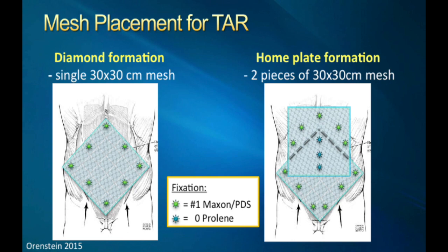Mesh fixation is a bit controversial. Typically, I like to place a round of transfascial sutures to fixate my mesh — usually one superiorly, one inferiorly, and then two or three at the lateral aspects. If I do a home plate, sometimes I'll take a small piece of prolene and fix the meshes together to prevent them from sliding around. Some surgeons are using fewer and fewer transabdominal fixation points, and some even use no fixation. However, in my opinion, I like placing transfascial fixation to offload the tension of my closure and put that onto the mesh itself.